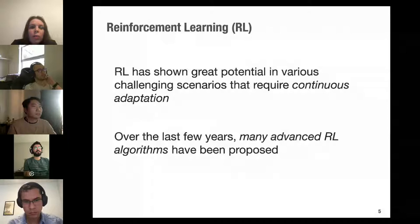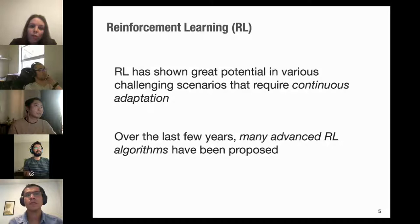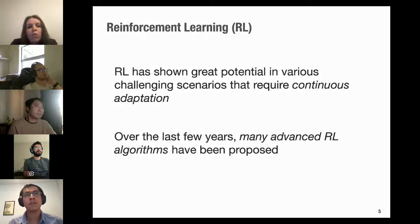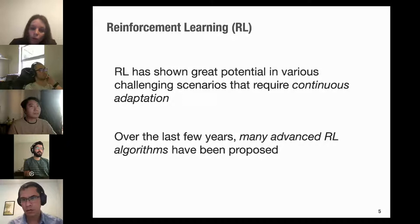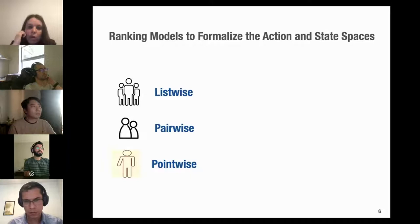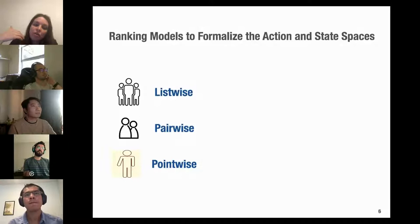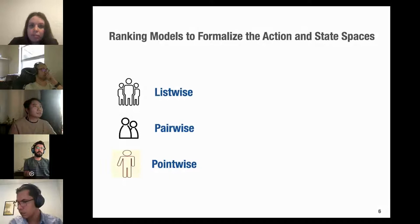The motivation for using RL: it has recently been applied to challenging scenarios requiring continuous adaptation, similar to what we have for test case prioritization in the CI context. We also have many advanced RL algorithms proposed over the last few years that can increase accuracy. In our work, we model the sequential interactions between the CI environment and the test case prioritization agent as an RL problem, using ranking models including listwise, pairwise, and pointwise.